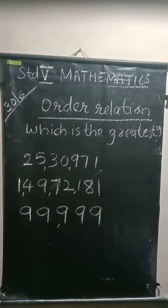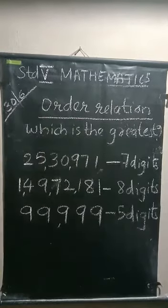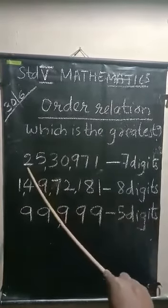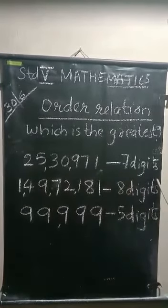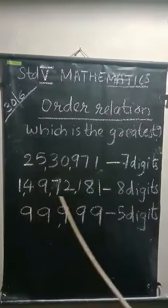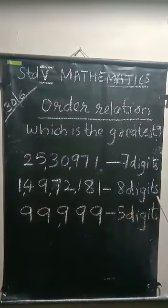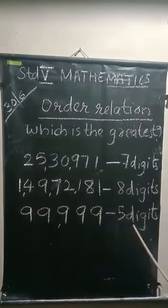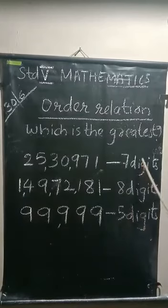Now, let us count the number of digits of each number. In these three numbers, first one has seven digits. Second one has eight digits. And third one has five digits.